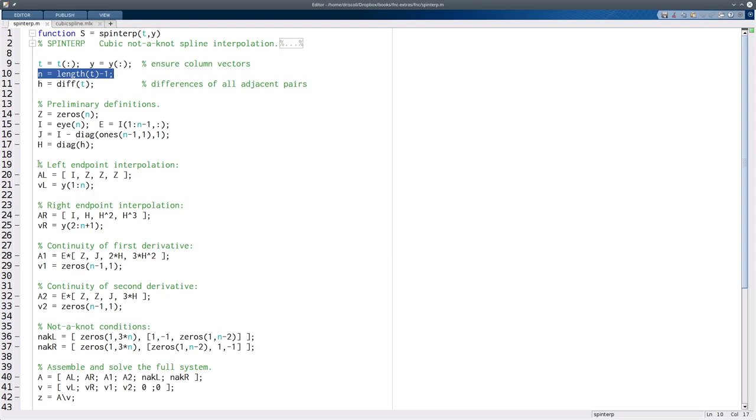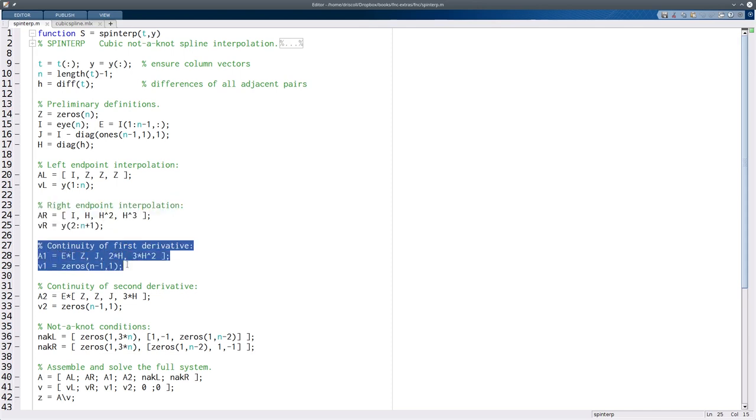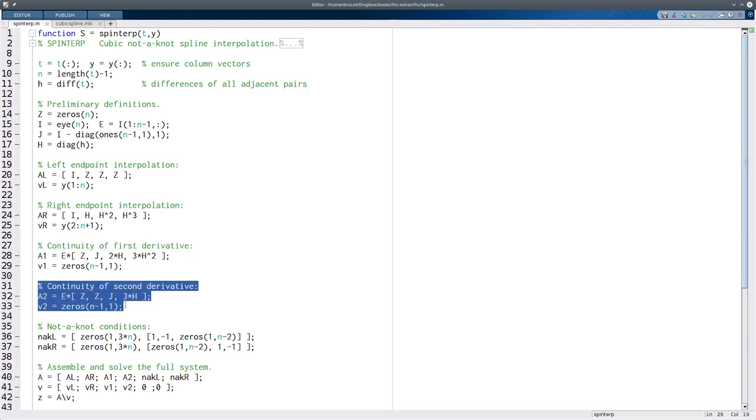You end up having four kinds of conditions. One's for all the left endpoints. One is for all the right endpoints. The third type of condition is the continuity of the first derivative, and the fourth type is the continuity of the second derivative. And finally, to make the whole system square, you need two more conditions, and those are based on what we call the not-a-knot conditions, continuity of the third derivative at the second and next-to-last node.